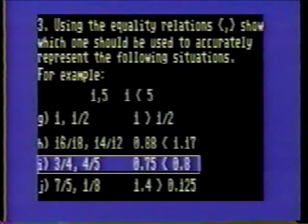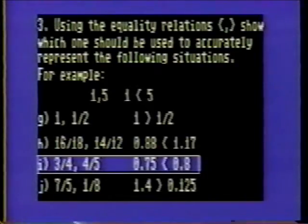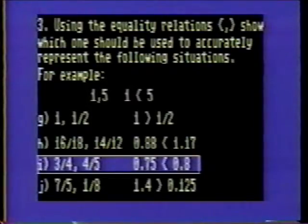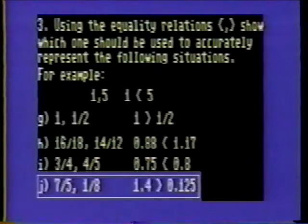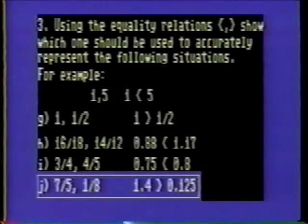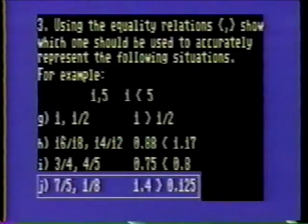Problem 3I: 3 fourths is the same as 0.75, while 4 fifths is the same as 0.8. Therefore, 0.75 is closer to zero. Problem 3J: 7 fifths is the same as 1.4, while 1 eighth is the same as 0.125. Therefore, 7 fifths is greater than 1 eighth.